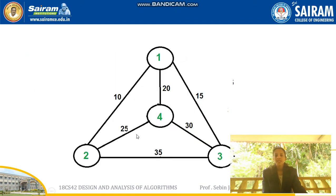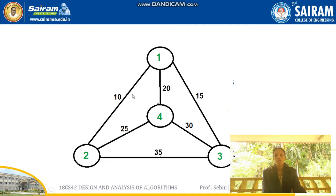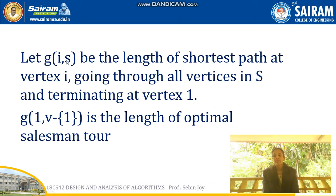We will see one example here. This is the graph given where 1, 2, 3, 4 are the vertices and these are the edges. According to the salesman problem, 1, 2, 3, 4 are the cities and the numbers on the edges are the costs — for example, 10 is the cost to travel from city 1 to city 2. We also need to define the term g(i, S), which is the length of the shortest path starting at vertex i going through all the vertices in set S.